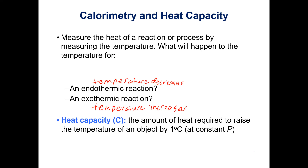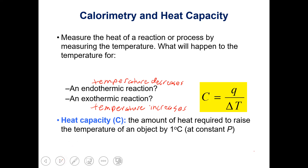Heat capacity is defined as the amount of heat required to raise the temperature of an object by one degree Celsius. We can put that into equation form: the heat capacity, represented as C, is equal to the amount of heat Q divided by the change in temperature, delta T, where delta T is one degree Celsius.